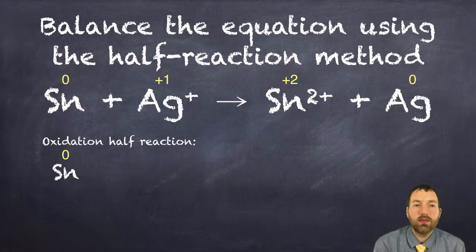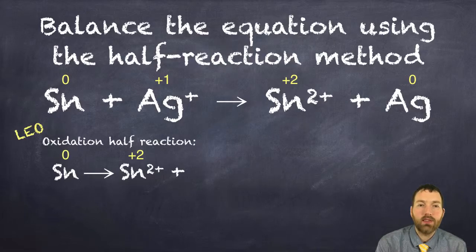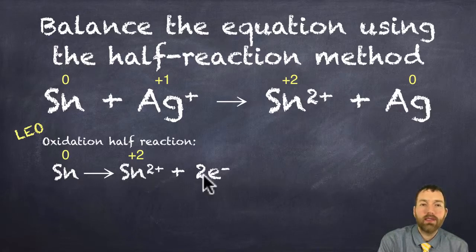Tin with its zero oxidation number turned into a tin two ion with a plus two oxidation number, and it did this by losing electrons. It has to lose exactly two electrons to balance out the charges.